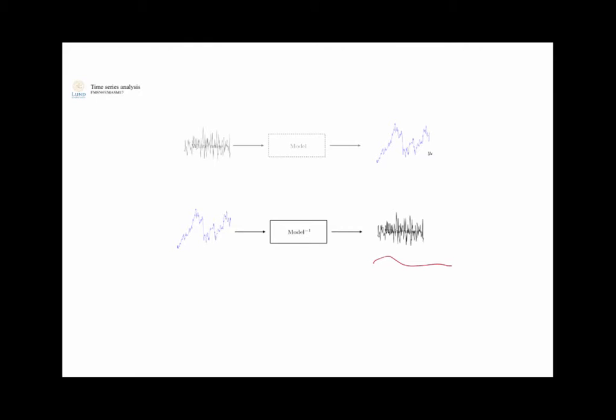The principle is simple: we build a very simple model first, then we add to it, making it more and more advanced so that we capture more and more of the structure of the signal, until whatever is left that is not modeled is essentially close to being white noise. And then we're happy.